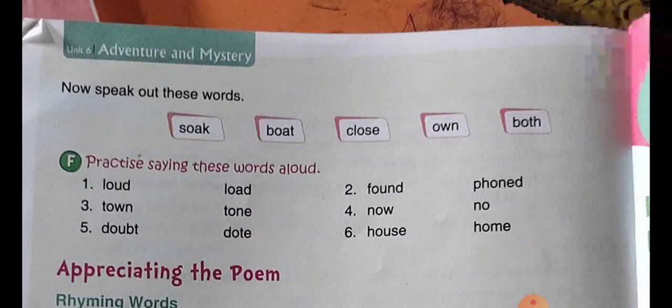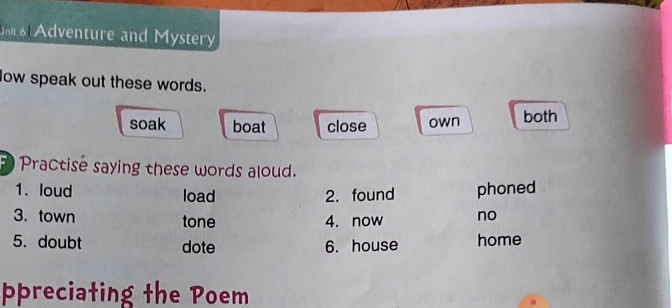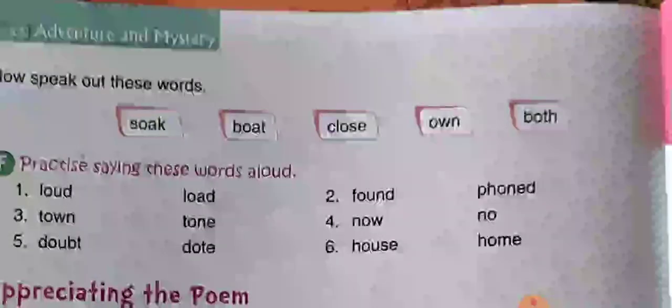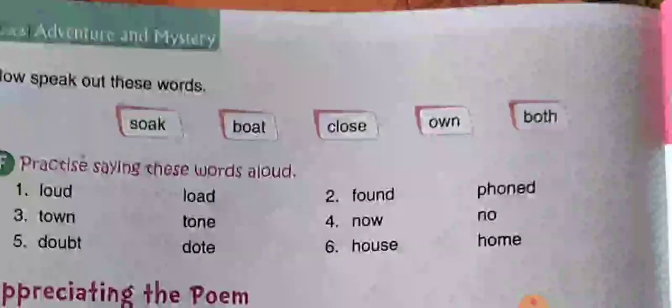Now speak out these words. Ab mere saath speak: so, vote, close, own and both. Dekhe, ab iske pehle humne jo sound par dhyan diya, woh tha O aur U sound jo hai, woh mil karke 'OU' sound dete hain. Lekin yahan par O aur A hai. Yeh dono mil karke kaun sa sound de rahe hain? Dhyan de: so, vote, close, own, both.